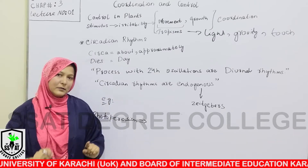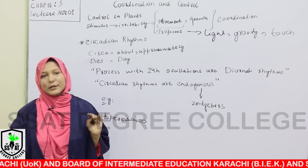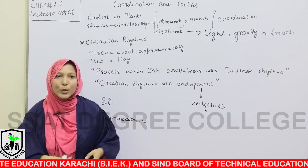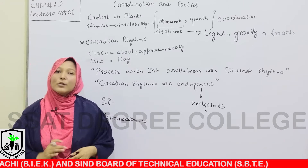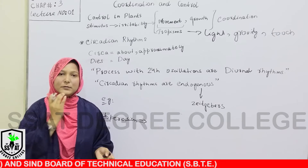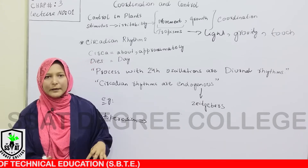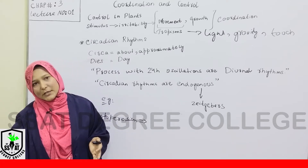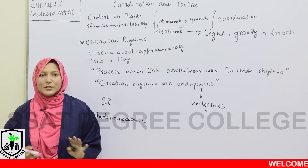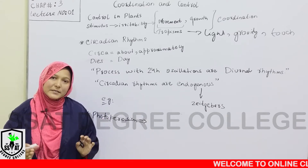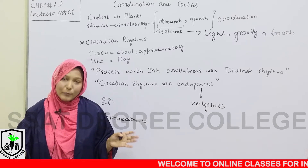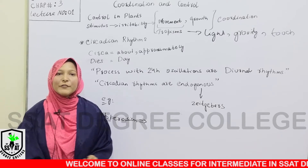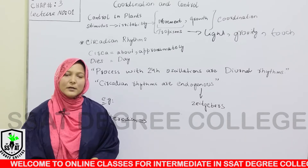For all these functions to happen, the different organs of the plant, different cells, and organelles inside the cells must establish a relationship with each other. This relationship, in biological terms, is called coordination. Coordination is the terminology that tells us that when the body organs or cellular organs of an organism interact to perform a proper function, that is called coordination.